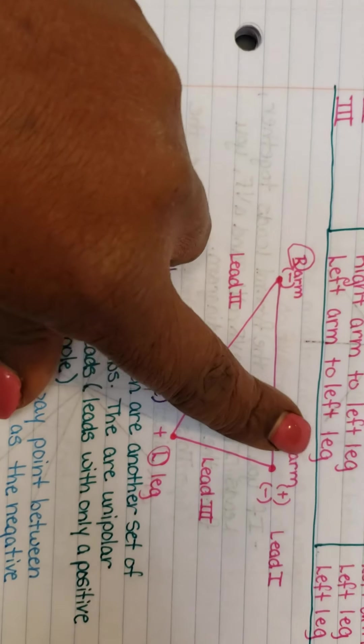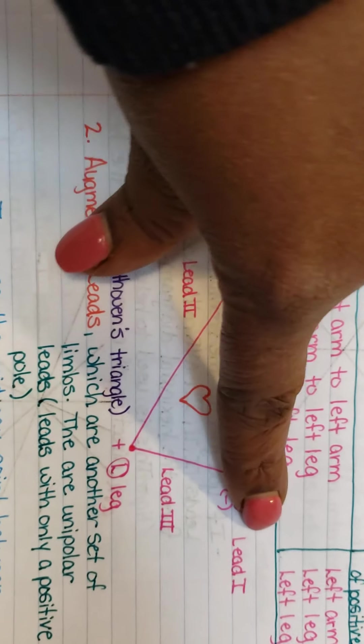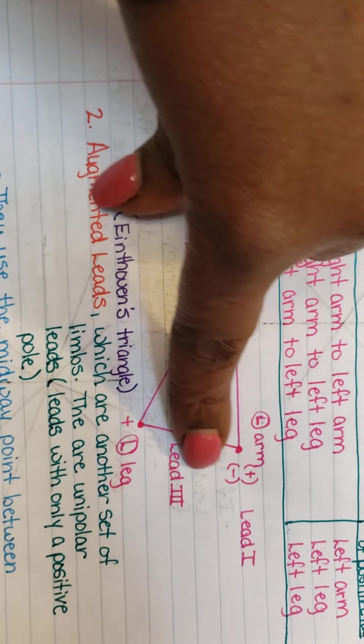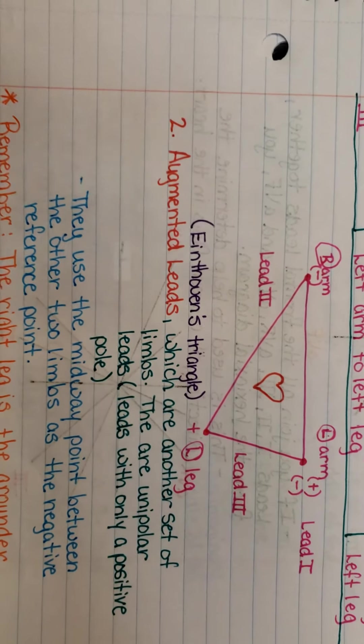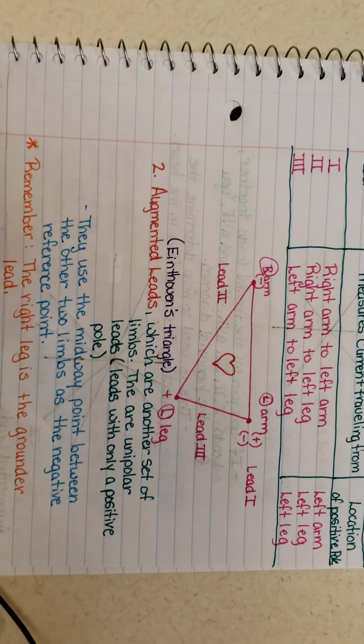If we take left arm, which now is negative, and we read it from left leg, which is lead three, left leg still stays positive, which forms Einthoven's triangle.